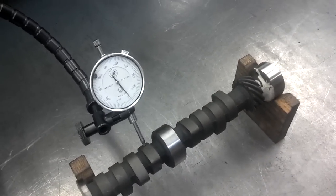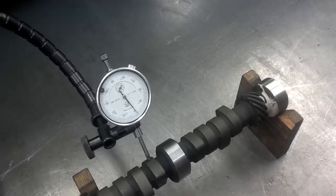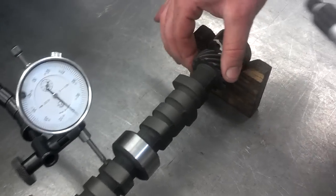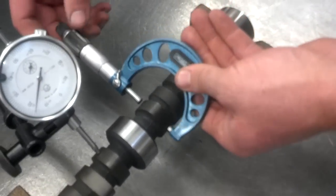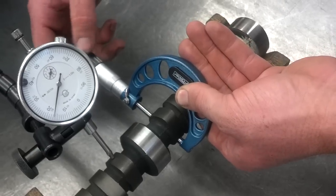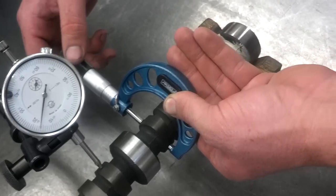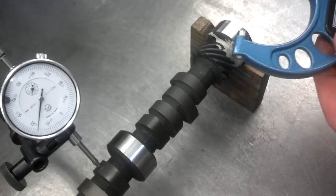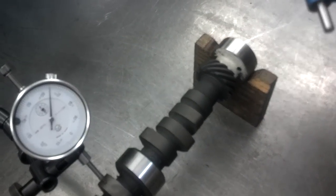And then finally, you can do lobe lift also with a micrometer. You do that by measuring the base circle of the lobe. You take that measurement and compare it to the measurement of the top. Turn the lobe and measure it from top to bottom now.